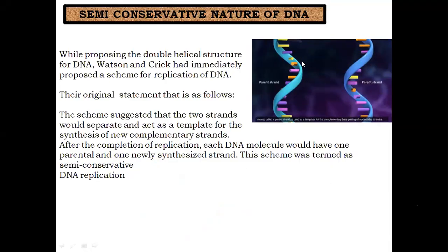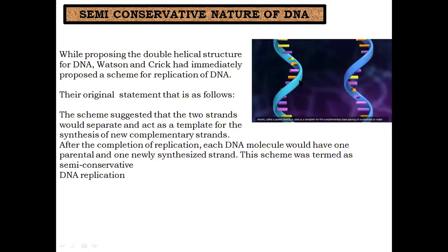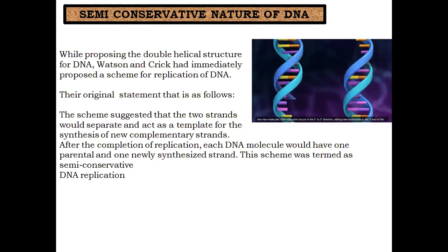How does this happen? First, the double strand will be separated, then a new strand will be formed. When the next generation is formed, this strand and that strand will be different. This strand will form the other complementary strand. So our parental strand will be retained until the last generation. In the newly synthesized DNA, there will always be a parental strand. We call this the semi-conservative nature of DNA.